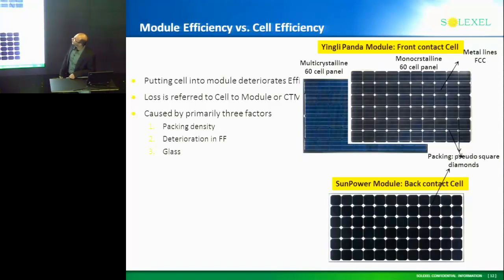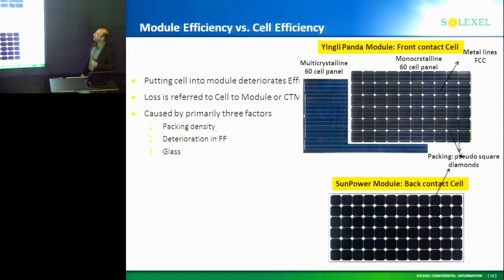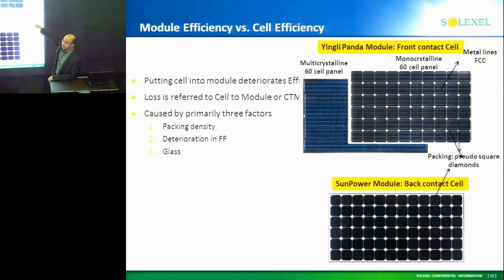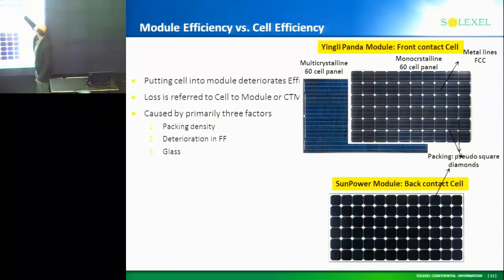There's something called a front contact cell and a back contact cell. This is a multi-crystalline cell. A module is typically a 60-cell panel — that's the standard in the industry. The multi-crystalline cell tends to be blue-black and you see those diamond-shaped gaps — that's one of the packing inefficiencies. The SunPower cell is all black because both the base and emitter contacts are on the back. A typical front contact cell has visible silver lines on the front.